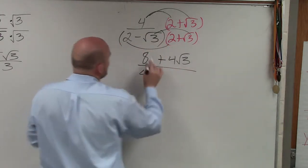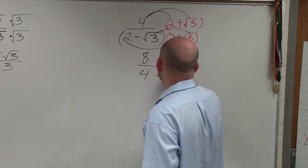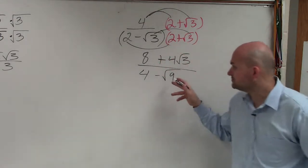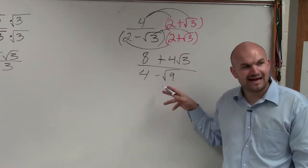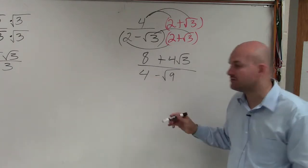2 times 2 is 4. Negative square root of 3 times negative square root of 3 is negative square root of 9. The square root of 9 is 3, so 4 minus 3 is 1.